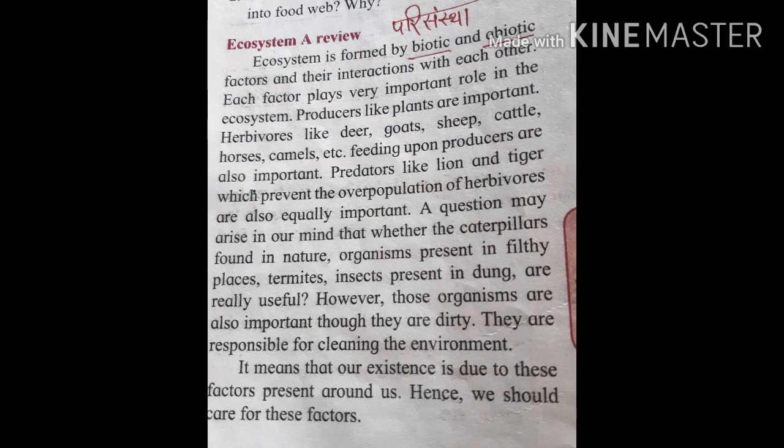Producers like plants are very important. Herbivores like deer, goat, sheep, cattle, horses, camels, etc. — herbivores means in Marathi it is called as Shakahari Prani — feeding upon producers are also important. Animals like lion and tiger prevent the overpopulation of herbivores and are also equally important.